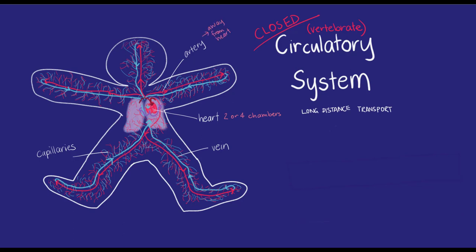Arteries carry blood away from the heart and towards capillaries. Veins carry blood from capillaries and towards the heart. The capillaries are where the diffusion of molecules into the interstitial fluid around cells can happen.